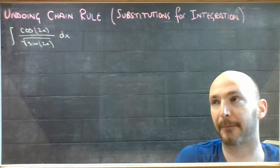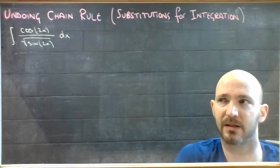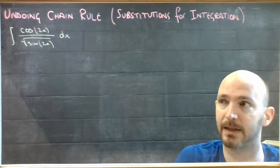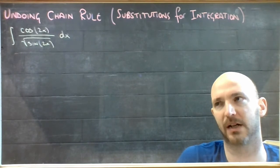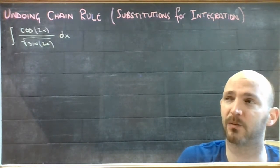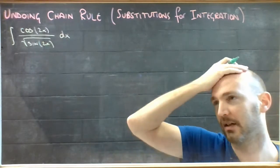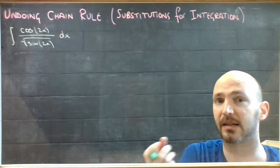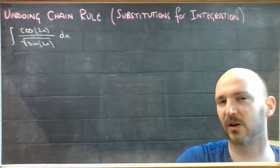The last example has a cosine divided by the square root of a sine — that's a lot of pieces. But you're using the same technique. If it's a composite mess, it either came from a product rule that factored nicely or from a chain rule, and if it's a chain rule you can make a replacement. The thing you replace is always something inside something else. The cosine is not inside anything else, but the sine is, so I'm going to go with that one.